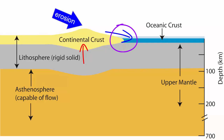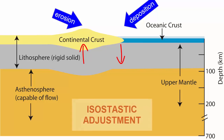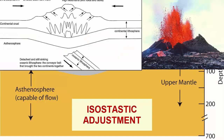And what happens when eroded sediment is carried to the coast and dumped on the edges of the continental shelf? The land there will sink under the weight. So Earth's surface is continually rising and sinking isostatically as weight is removed or added by erosion, deposition, volcanic eruptions, mountain building processes, and other processes related to plate tectonics.